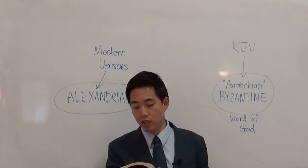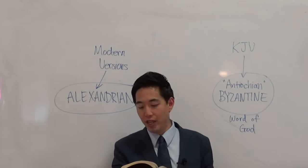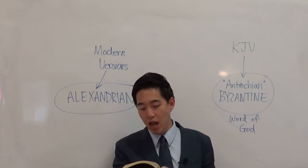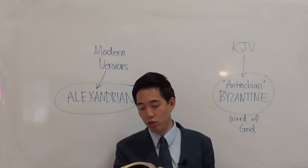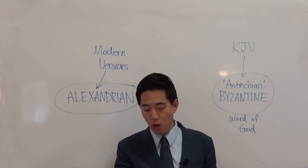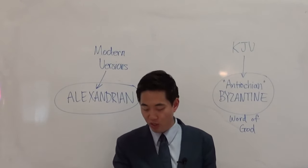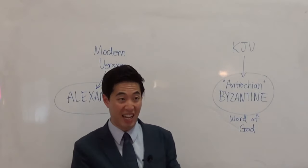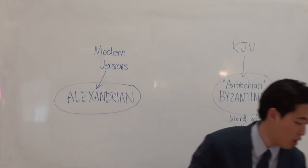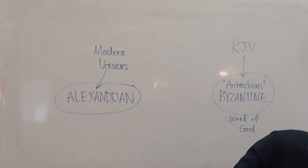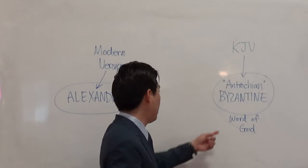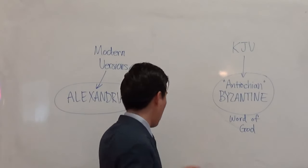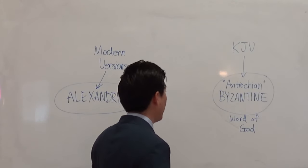Verse 26 says he brought him unto Antioch, and it came to pass that a whole year they assembled themselves with the church and taught much people. And the disciples were called Christians first in Antioch. That's where the Word of God originally started, and Christianity.